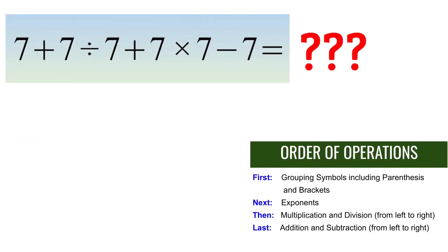In this numerical expression, there are no grouping symbols like parentheses or brackets, and also there are no exponents. So, this means we will begin first with multiplication and division from left to right.